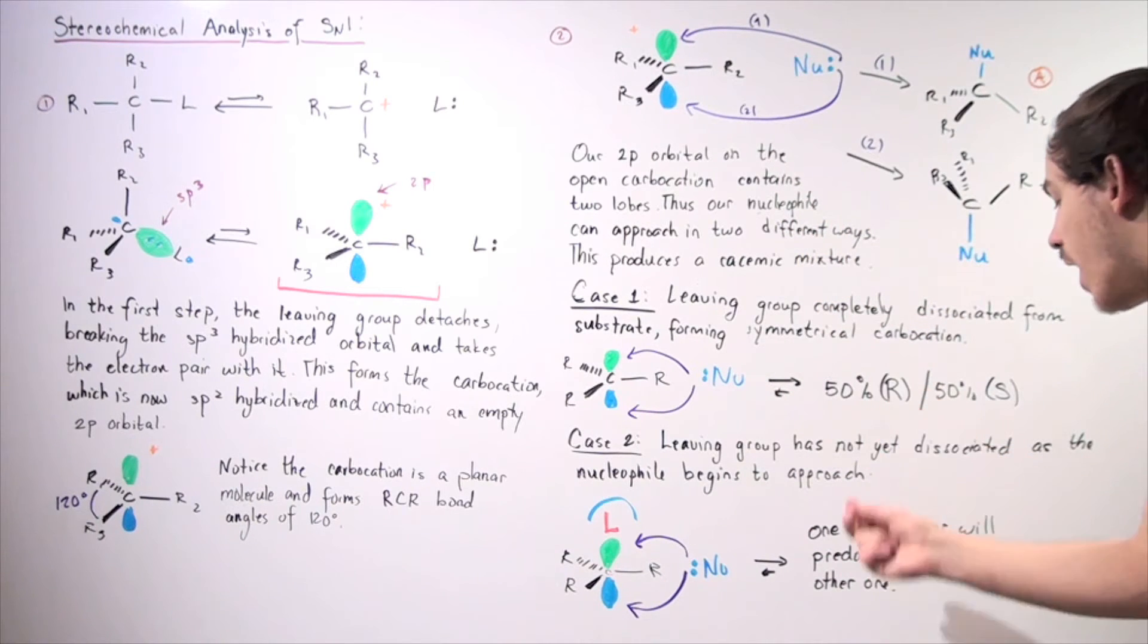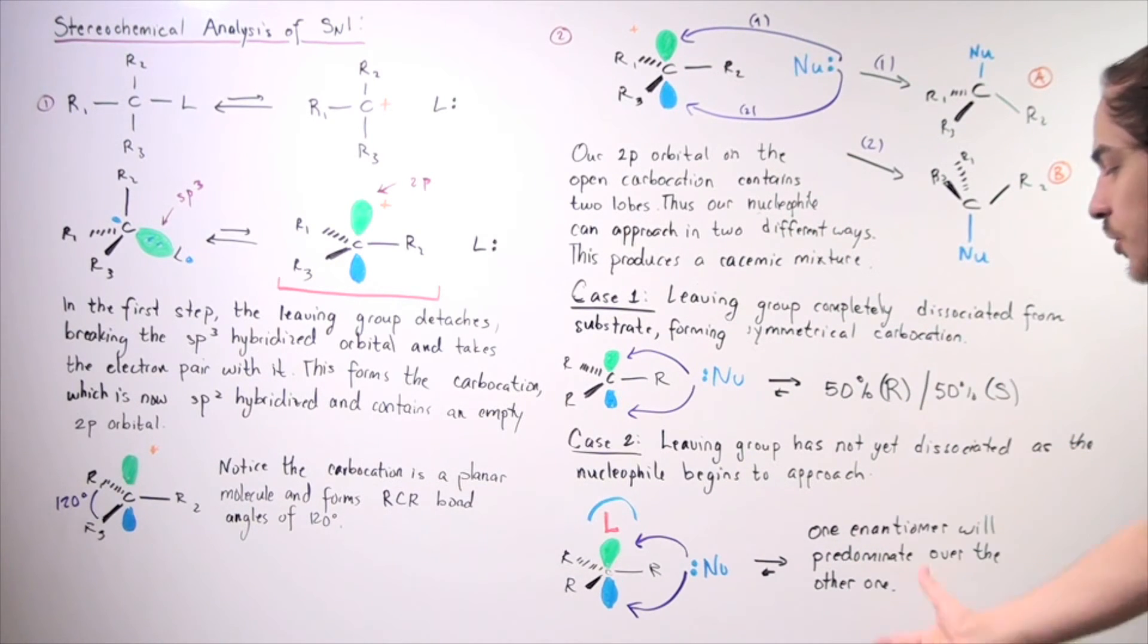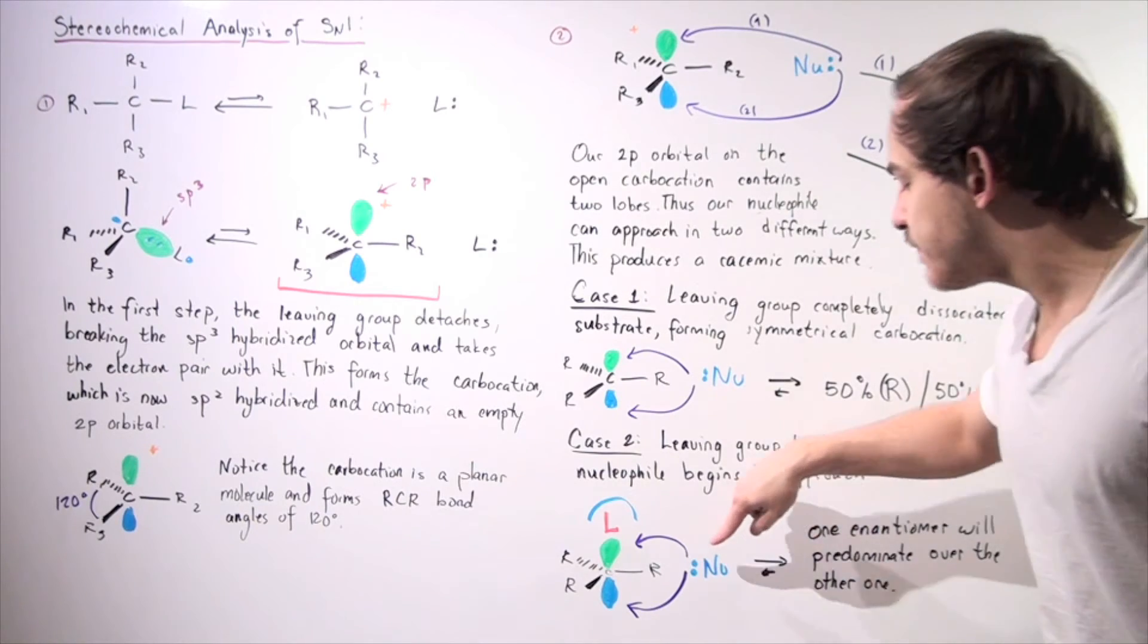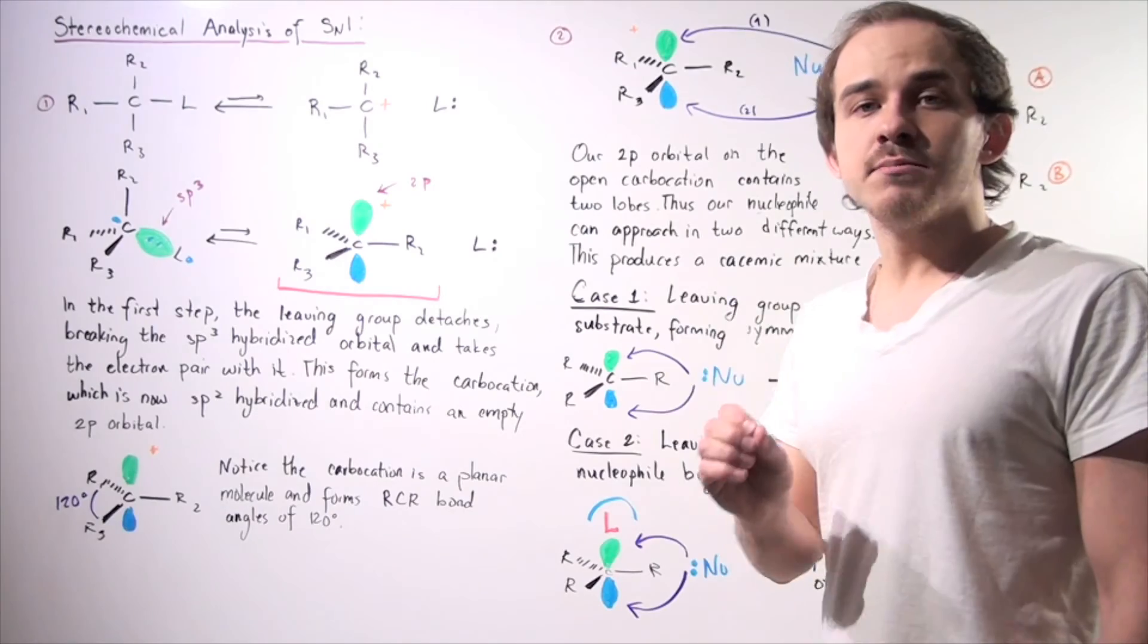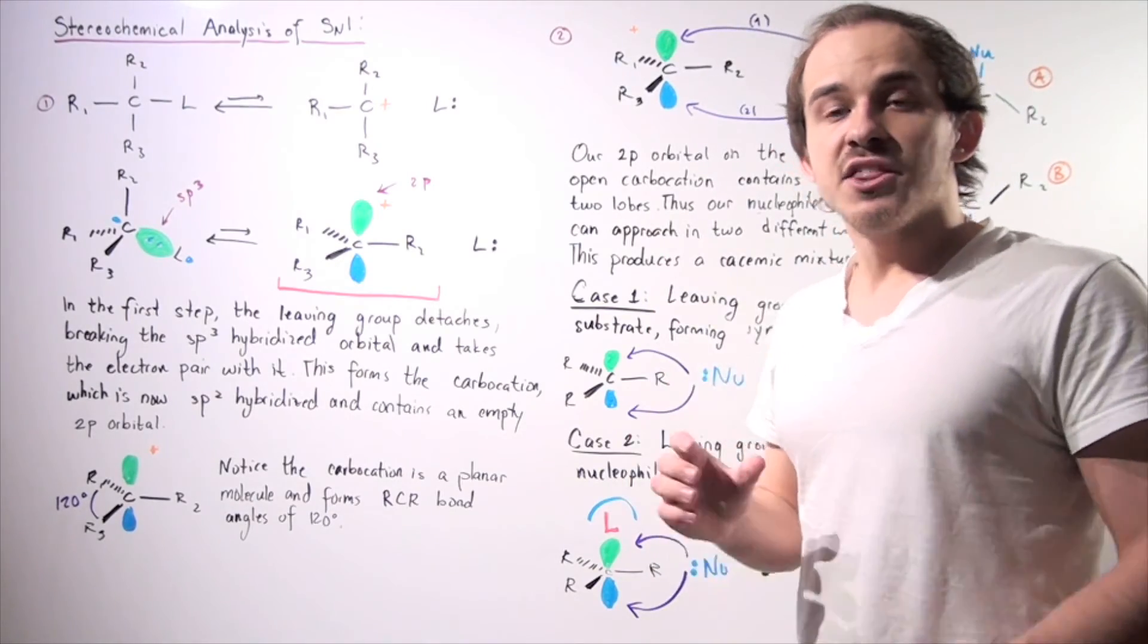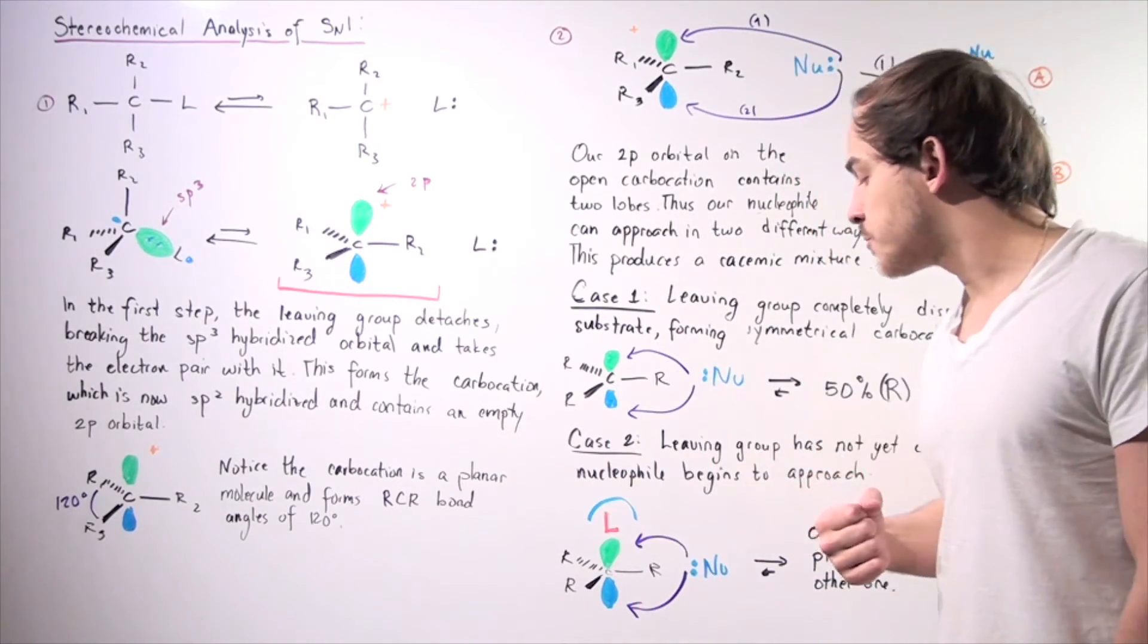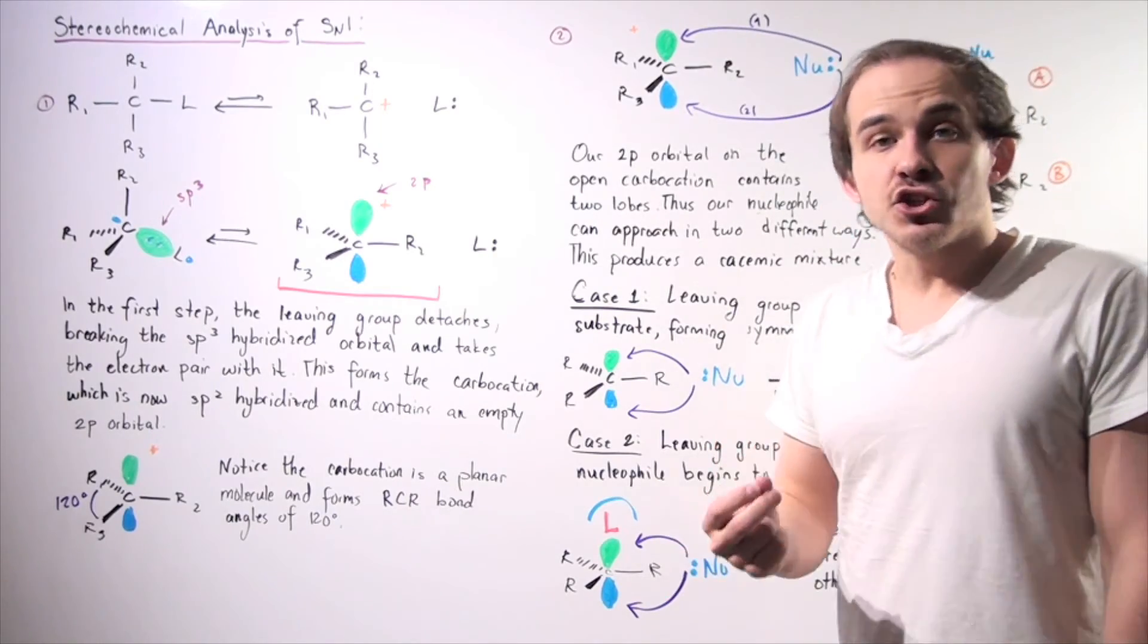And so, our nucleophile will be less likely to attack from the top, from the section where our leaving group is leaving from, than from the bottom. It will be more likely to attack from the less sterically hindered location. So, now, one enantiomer will predominate over the other one. For example, if the bottom one creates an R enantiomer, the R enantiomer will predominate. There will be more of the R enantiomer than of the S enantiomer.